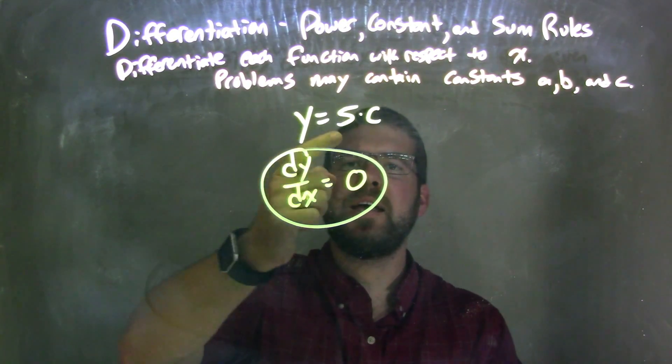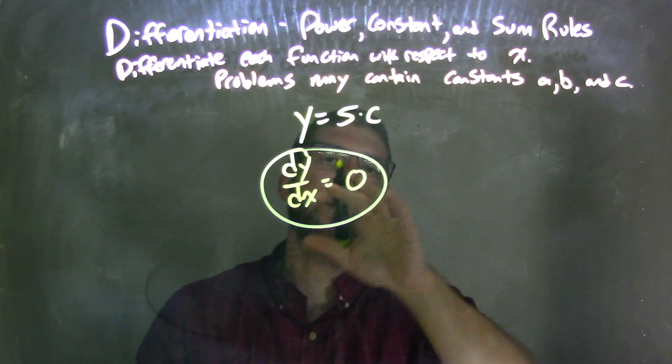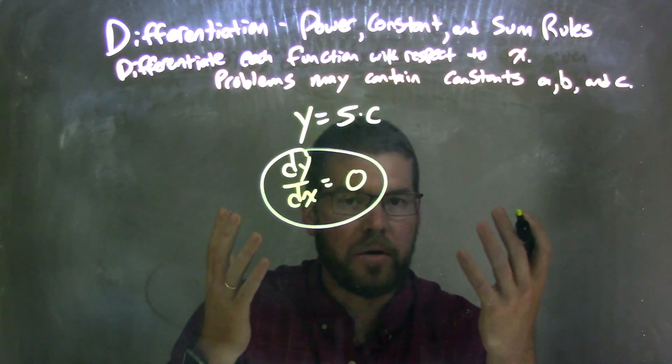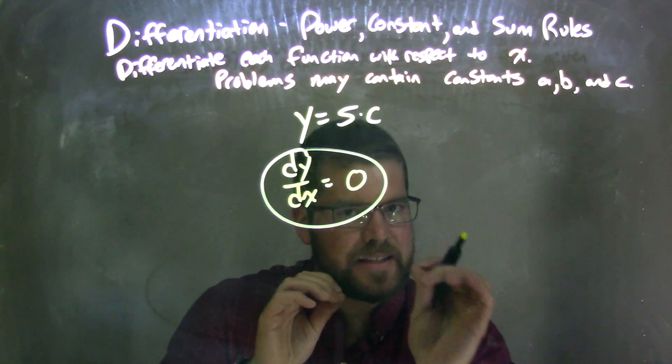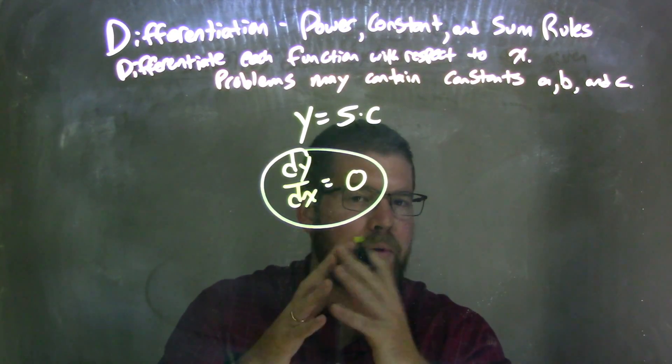So again, let's recap. We're given y equals 5 times c, c being a constant. Well, 5 times a constant is 5 times any number, right? Any one set number. Not just like a variable, like any kind of plug-in, but it's a set number, some constant. We just don't know what it is.